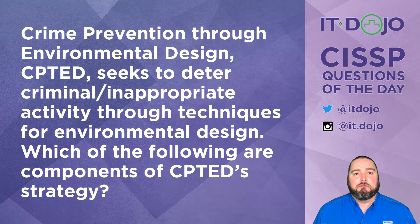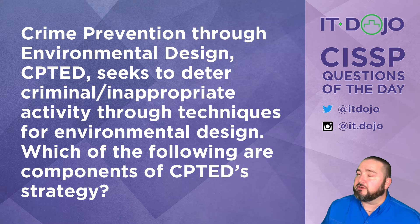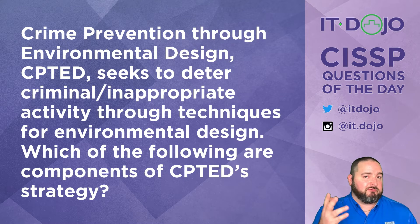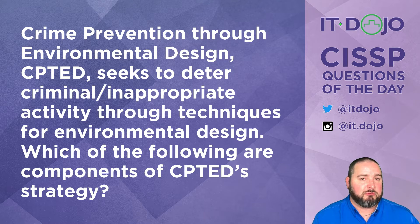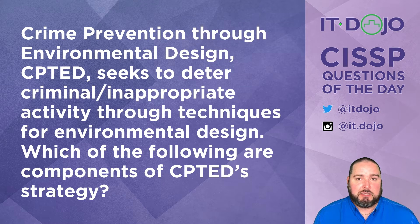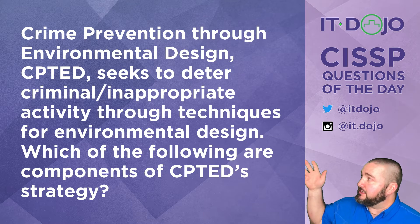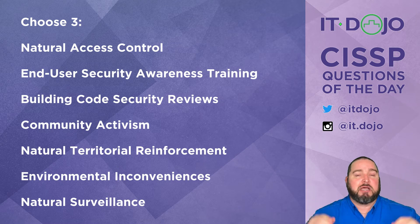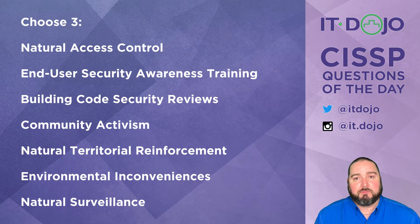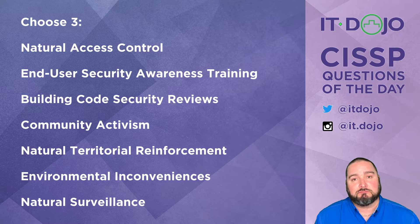First question today: Crime Prevention Through Environmental Design, or CPTED, is an initiative to reduce the incidence of criminal activity or criminal behavior in a physical environment by using environmental design characteristics. My question to you is, which of these options — pick three — are the broad topic characteristics of CPTED? Go ahead and give those a read, click pause if you need to, then click play and we'll break them all out.